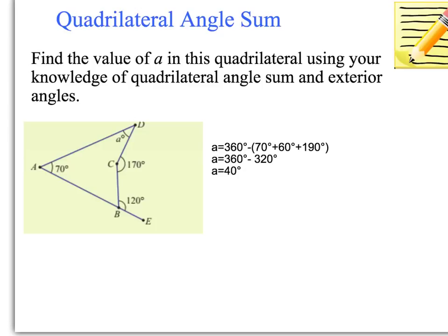What we need to do is look at the other angles and take them away from 360 degrees. It's not immediately evident what all the angle values are, so we work out what we know. We know 70 degrees. Then we use our knowledge of exterior angles — 120, we take that away from 180 and that equals 60 degrees for the next angle.